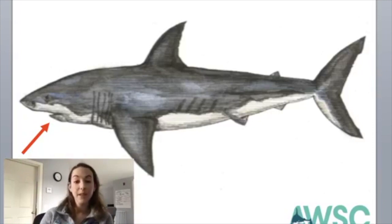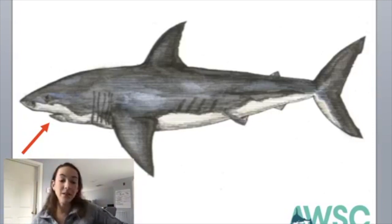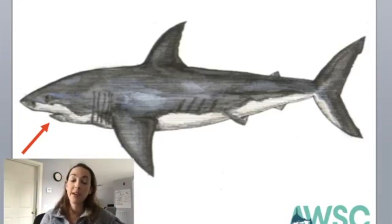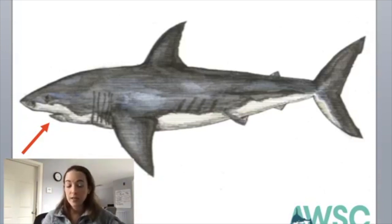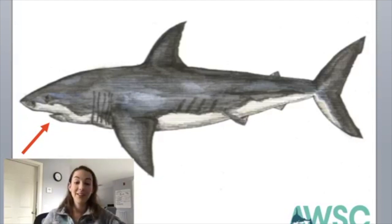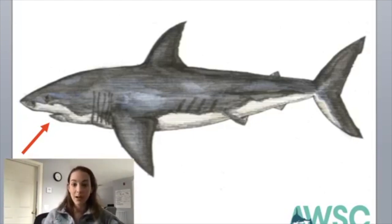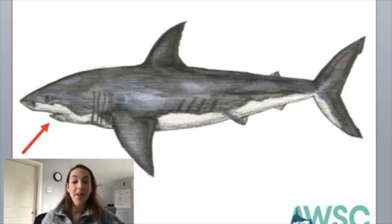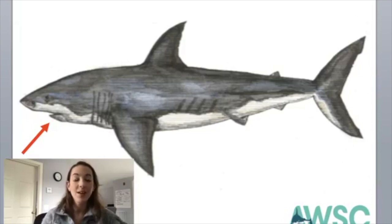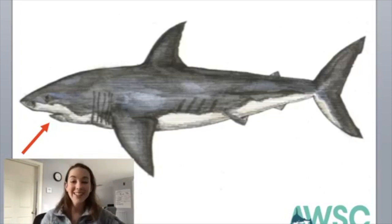Another characteristic that makes a shark a shark is something about their skin. Maybe you have touched a shark before at an aquarium touch tank, or maybe you have gone fishing and caught a shark. If I ran my hand down a shark's body, it would feel nice and smooth, but if you rubbed your hand back up, it would feel rough like sandpaper. That is because shark scales are a different shape than a bony fish's scales would be. Those scales are called dermal denticles.